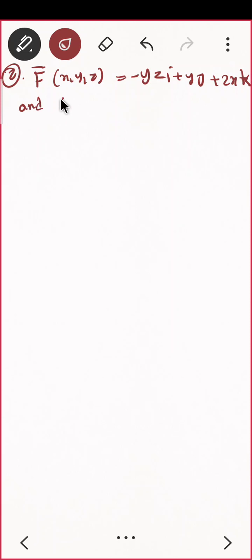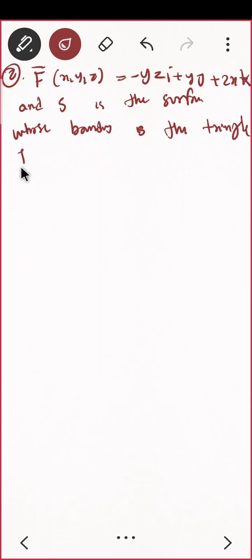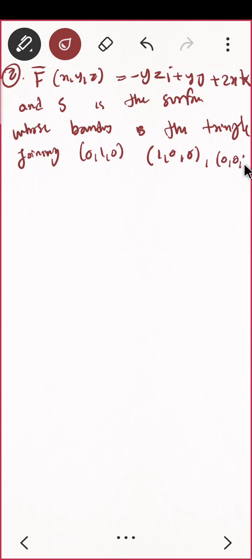Let me give another question. F-cap equals minus yz i plus y j plus 2x k, and S is the surface whose boundary is a triangle.